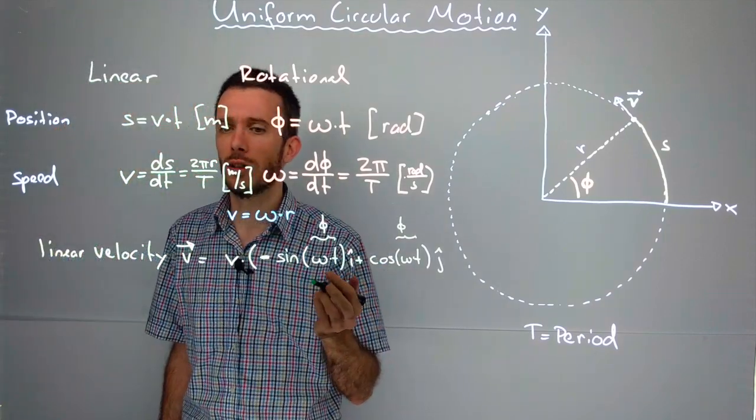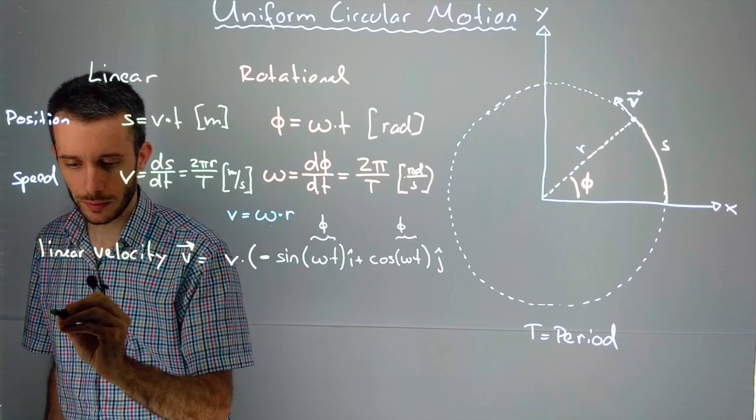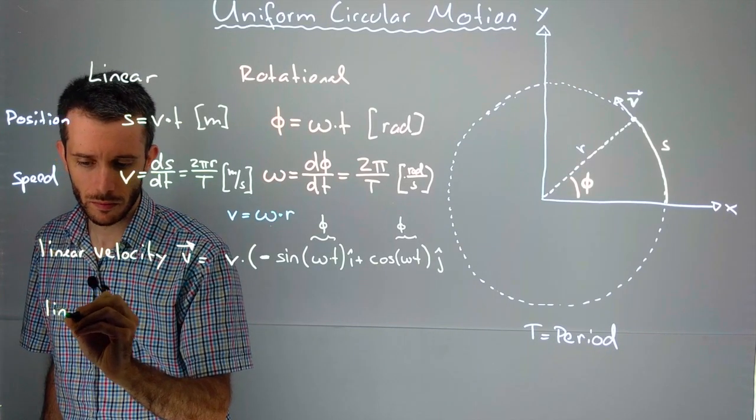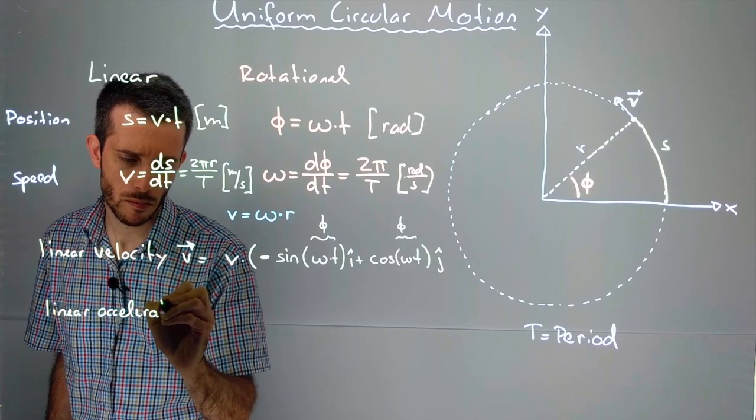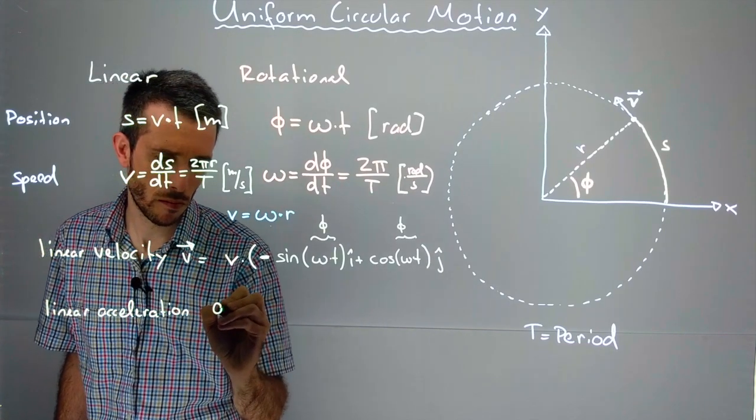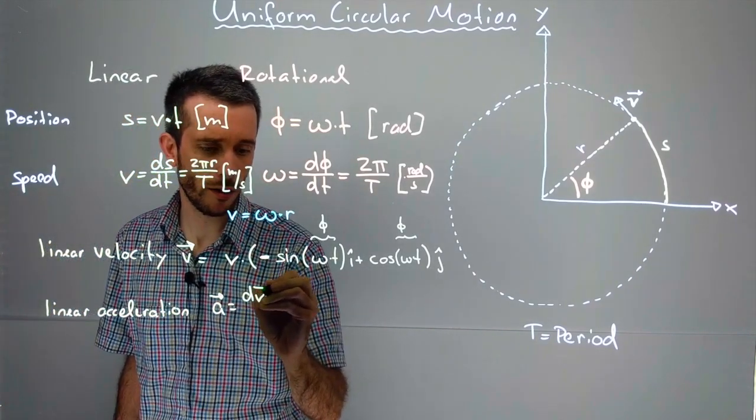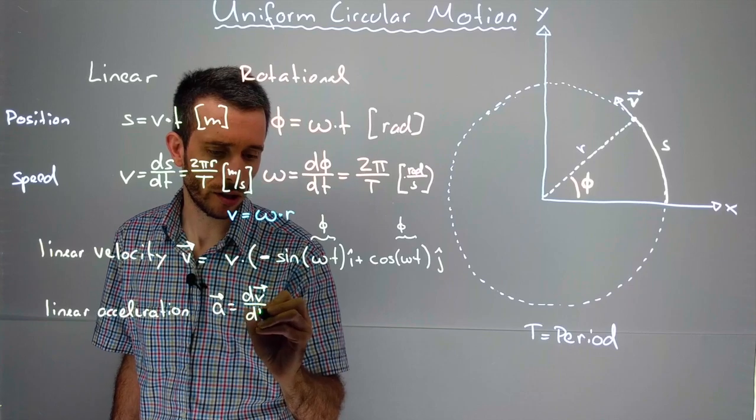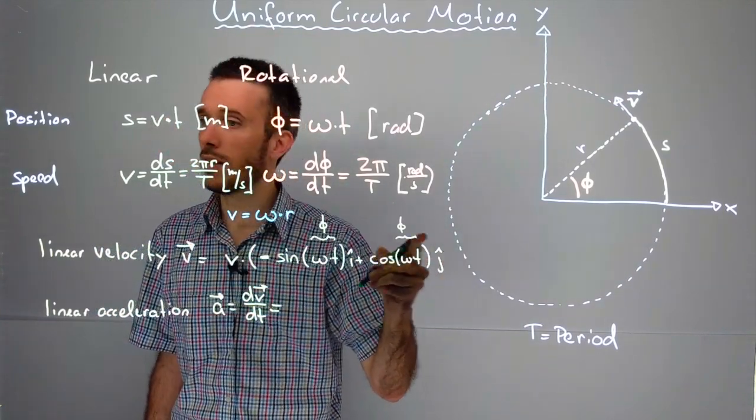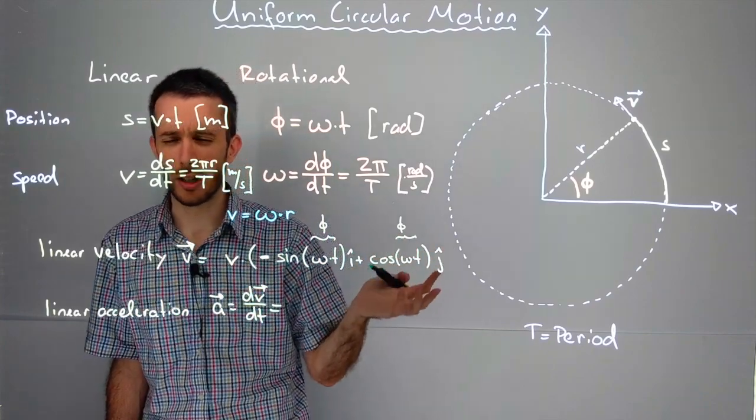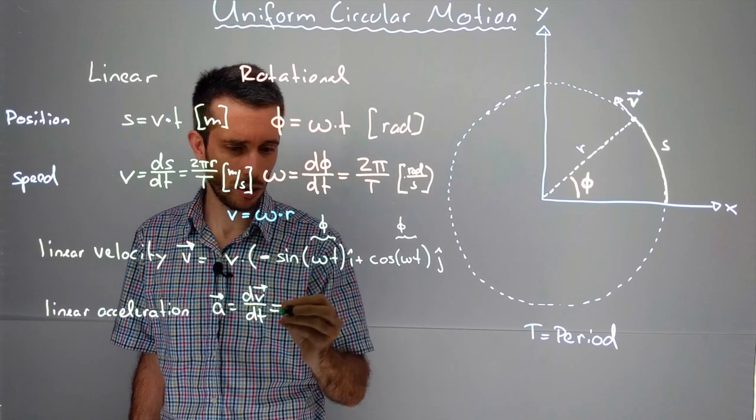Because now you can try to figure out, what does the linear acceleration look like? The acceleration, the linear acceleration, is the derivation of the velocity as a function of time. So if I derive this equation to that, I should get an expression in i-hat and j-hat for my linear acceleration. Let's do this.